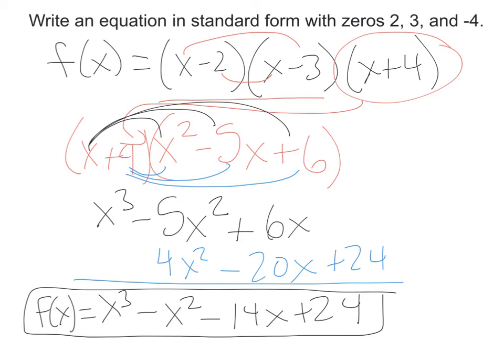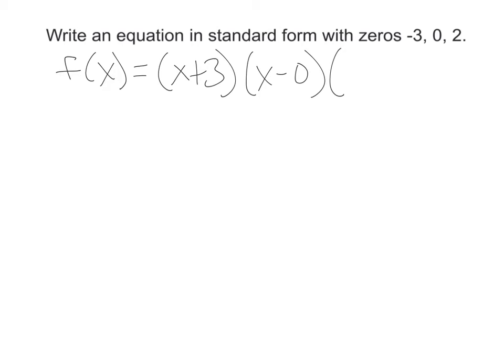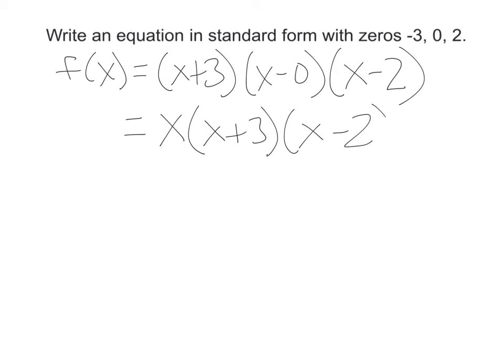So we'd classify this as a cubic polynomial by degree and number of terms. Here's another one. We have zeros: negative 3, 0, and 2. So when I write the factors, I have x plus 3, and 0 becomes just x, and x minus 2. I like to put the x out in front, giving us x times (x plus 3) times (x minus 2) in factored form.